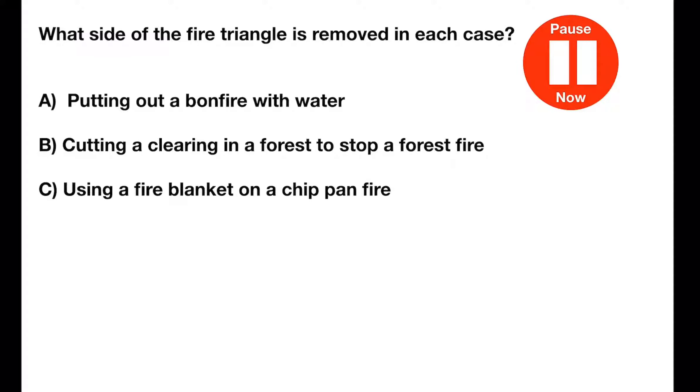Pause the video now and have a think about what side of the fire triangle is being removed in each of these cases. In the first case, we are putting out a bonfire with water. By using water you are removing the heat from the fire. In B, we are cutting a clearing in a forest to stop a forest fire. By cutting a clearing we are removing the trees which are the fuel for the fire. And in C, we are using a fire blanket on a chip pan. This means that we are stopping the oxygen from getting to the fire.